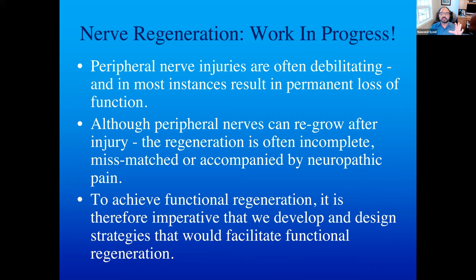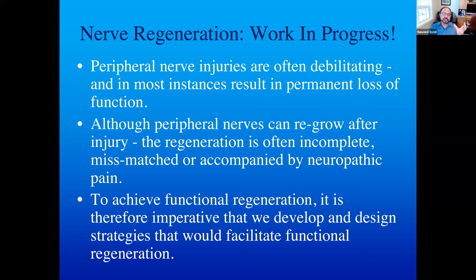Peripheral nerve injuries are often debilitating, resulting in permanent loss of function. Peripheral nerves can regrow after injury, but regeneration is incomplete, mismatched, or accompanied by neuropathic pain. To achieve functional regeneration — which is the work in progress I'm discussing — we need strategies that facilitate functional regeneration and also speed up the process. We published a paper in Neuroscience a couple of years ago showing we could enhance nerve regeneration four to five times, and using portable devices — for example in carpal tunnel syndrome — we could enhance growth by implanting these devices.